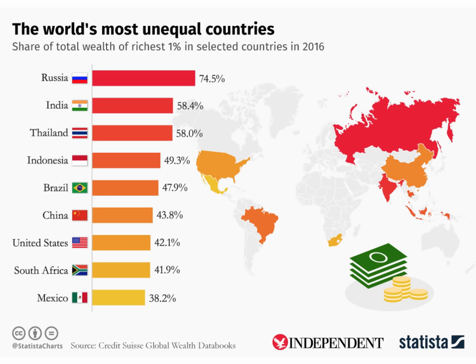Here's a striking chart which comes out every year — the annual survey of wealth from Credit Suisse's global wealth database. According to their latest report for 2016, Russia is far and away the most unequal country in the world when it comes to wealth. The richest 1% control 74.5% of the country's wealth, meaning 99% of the population share the remaining 25.5%. In countries like India and Thailand, the top 1% control 58% of each country's wealth.